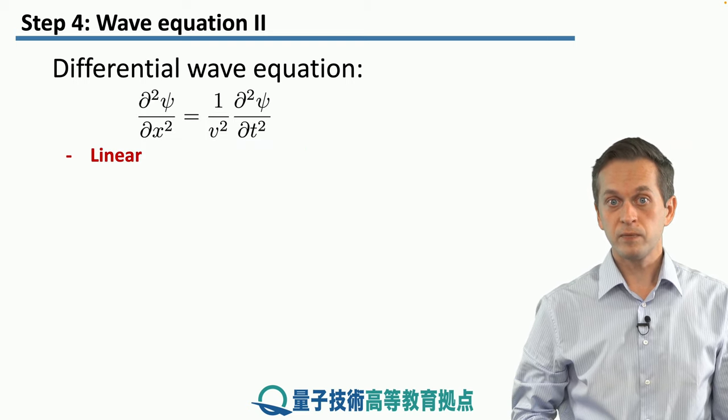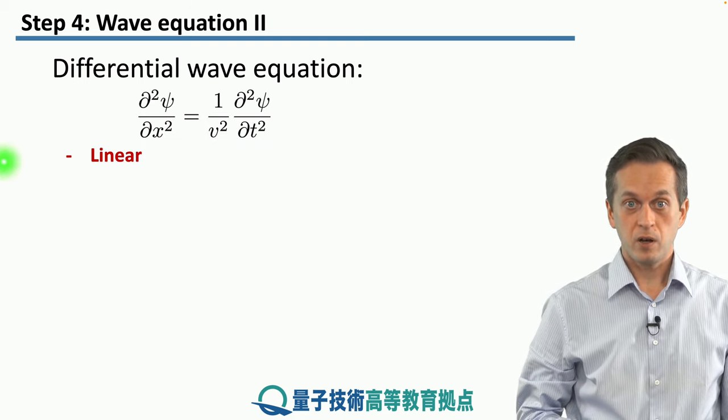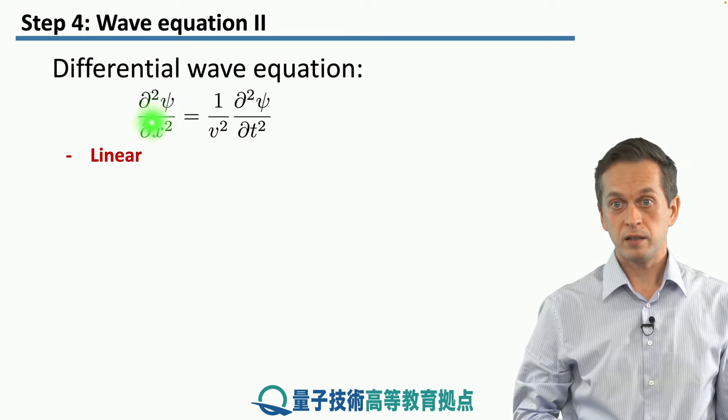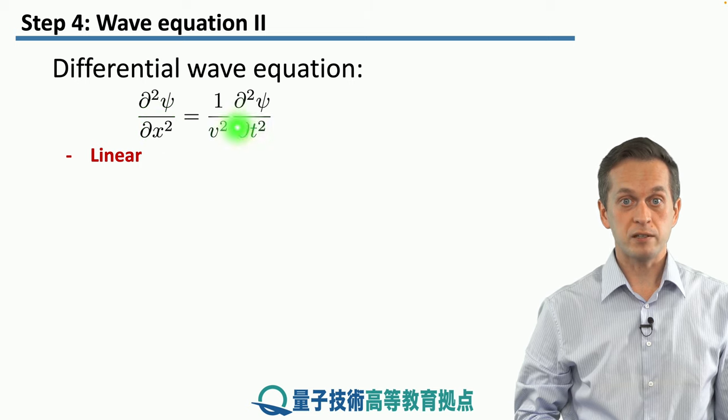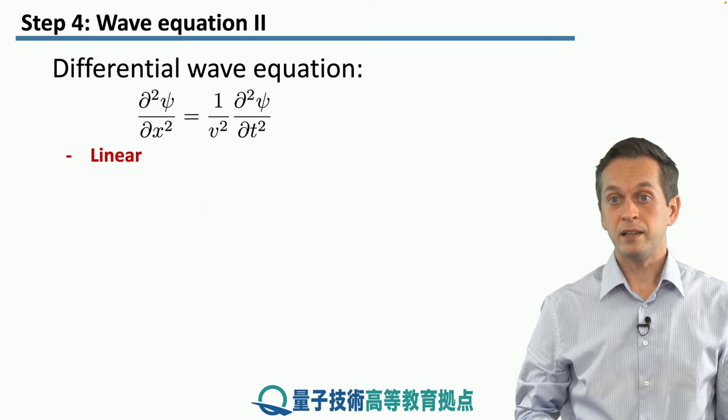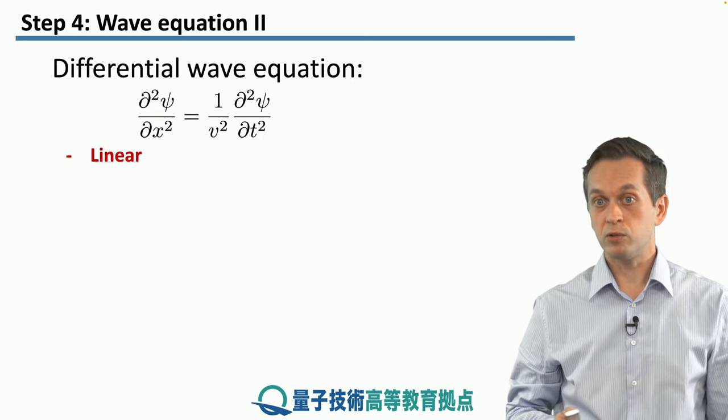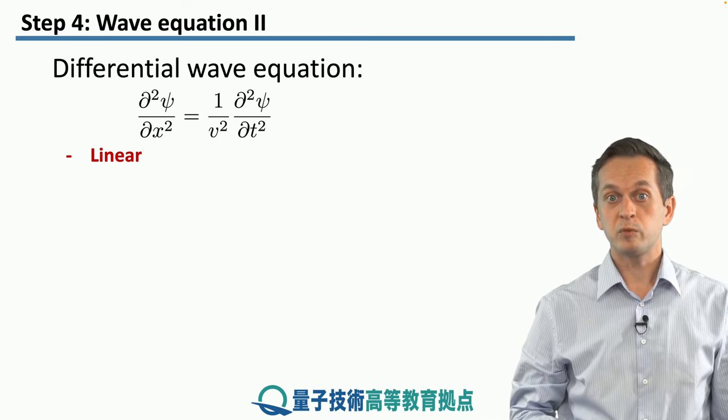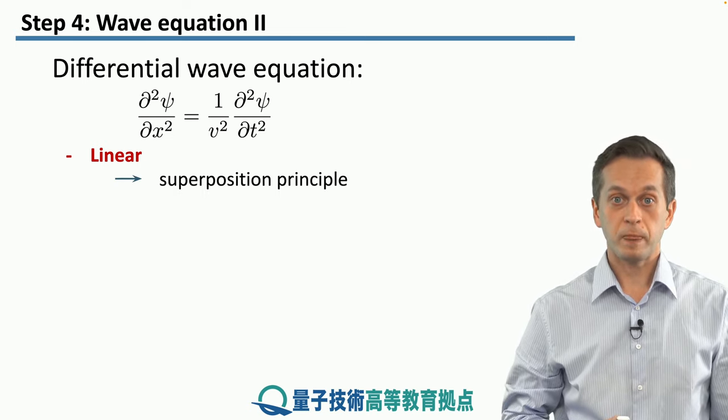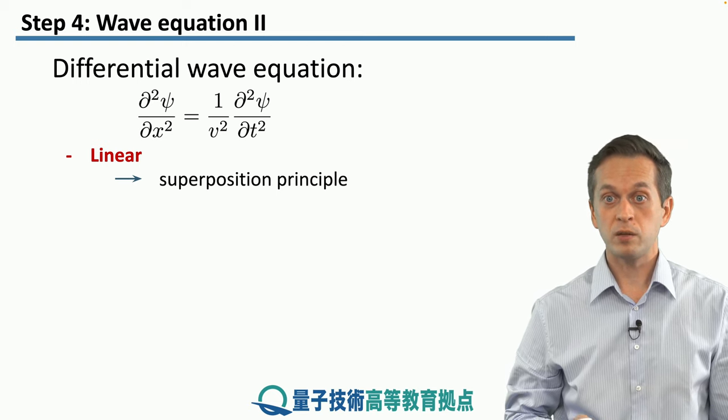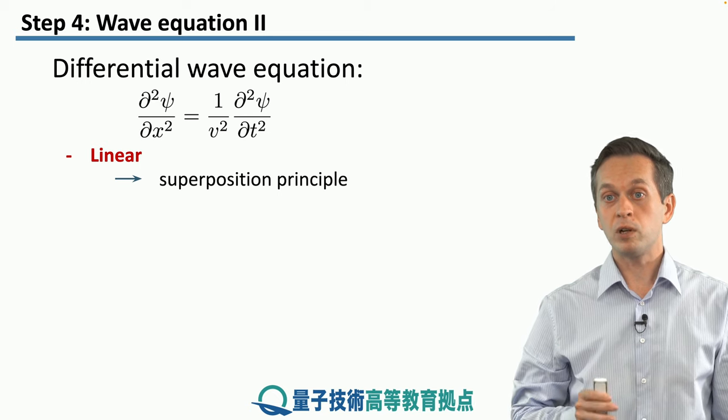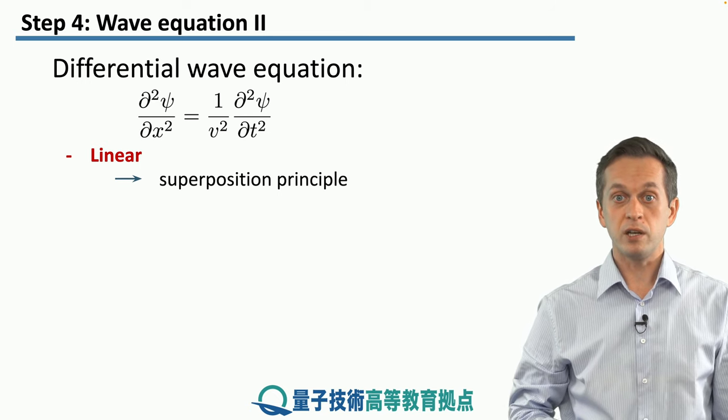So first of all, it is linear. What linear means is that if you give me one psi, let's say psi 1, that satisfies the following relationship, and then you find another different psi 2 that also satisfies the relationship, you can take the superposition of these two solutions. So psi 1 plus psi 2 will also be a valid wave equation solution.